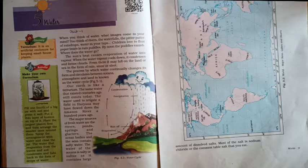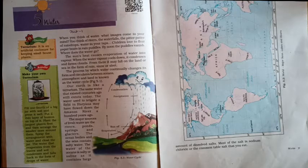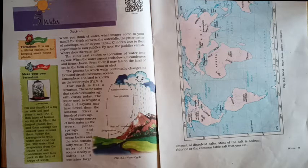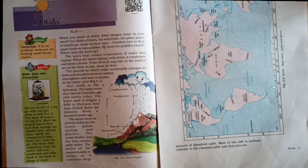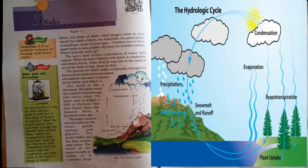The sun heats and causes evaporation of water into vapours. When the water vapour cools down, it condenses and forms clouds. From there it may fall on the land or sea in the form of rain, snow, or sleet. Water moves continuously between the hydrosphere, lithosphere, and atmosphere. This never-ending movement of water — water is never static and exists in a dynamic condition, changing its form and place. The circulation of the water from the hydrosphere to the atmosphere and back to the oceans is called the hydrological cycle or water cycle.